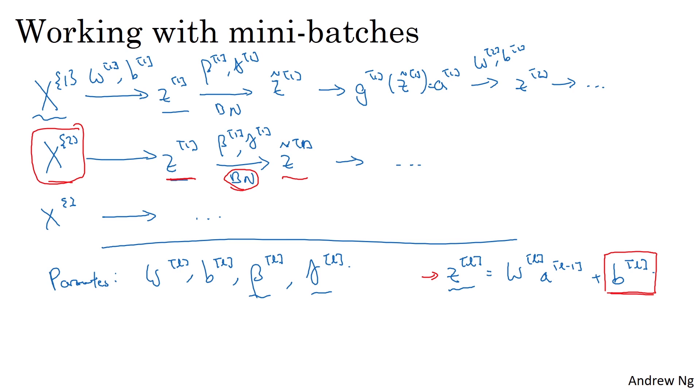So if you're using batch norm, you can actually eliminate that parameter, or if you want, think of it as setting it permanently to zero. So then the parameterization becomes zl is just wl times a l minus 1, and then you compute zl normalized. And when you compute z tilde equals gamma zl plus beta, you end up using this parameter beta l in order to decide what's the mean of z tilde l, which is what gets passed to the next layer.